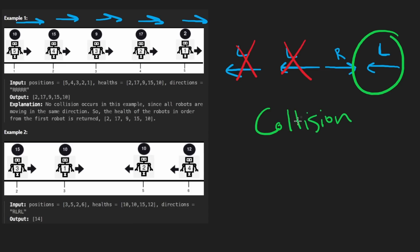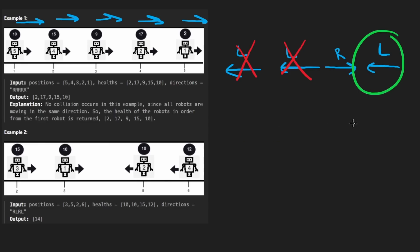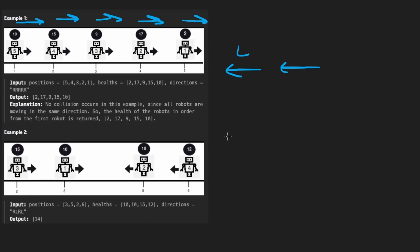Therefore you might get the idea of using a stack. Among these two robots, when they do collide, it's not going to be trivial because remember that each robot has some kind of health. So at this point I think we can start going through this example and seeing how we can use a stack on it.